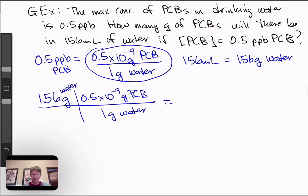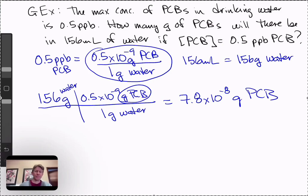I'm going to put my calculator in scientific notation mode, and it says 7.8 times 10 to the minus 8 grams of PCB, which is what we're looking for. Thank you.